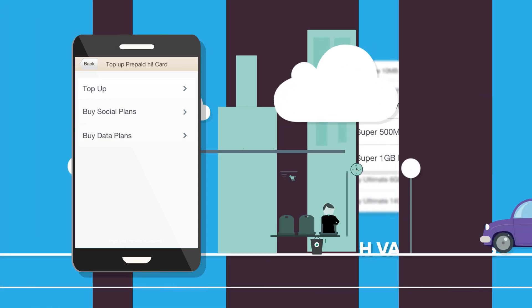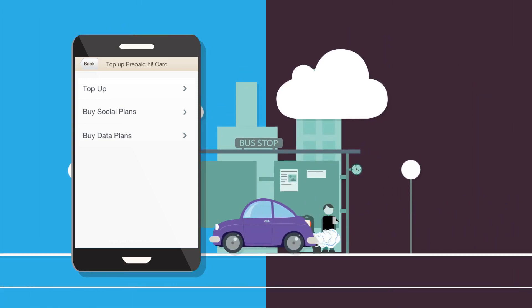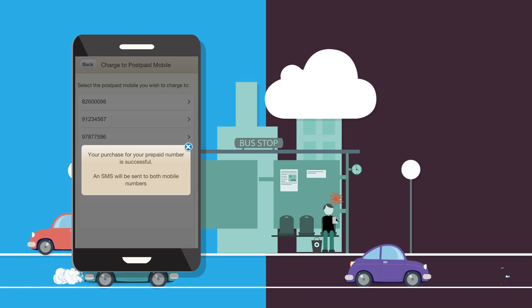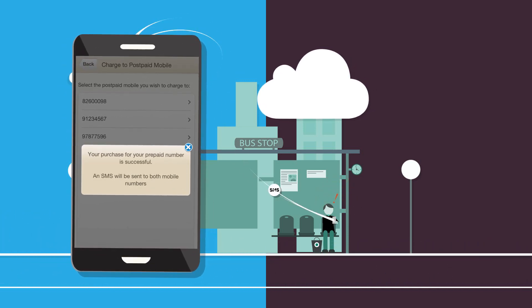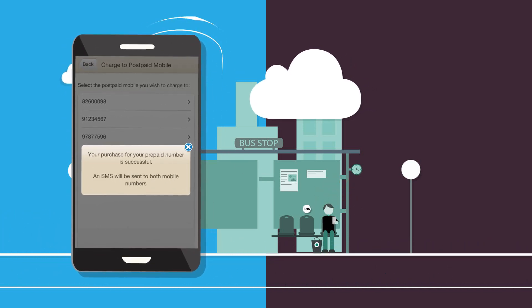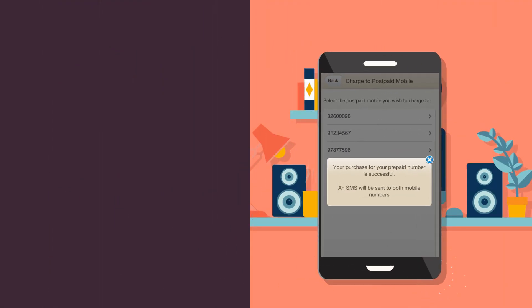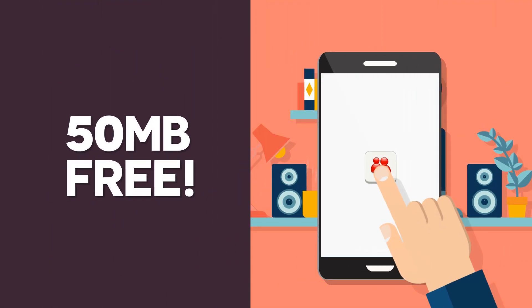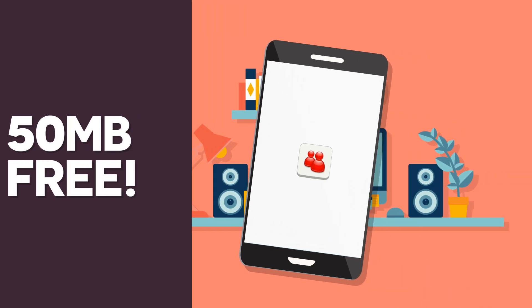And it's all easy and convenient, as all purchases will be charged to the selected postpaid bill with SMS confirmation sent to both the postpaid and prepaid numbers. Not only that, an additional 50 megabytes will be given for free to the prepaid account when you choose MySyncTel app to top up. It has never been easier or more rewarding to top up a Synctel prepaid number.